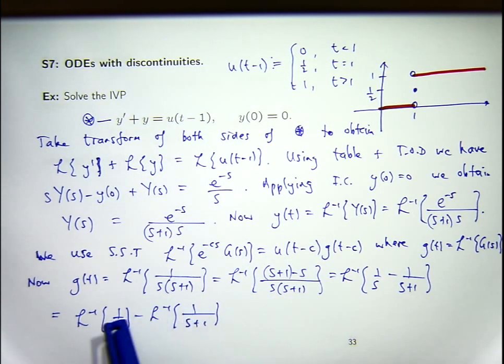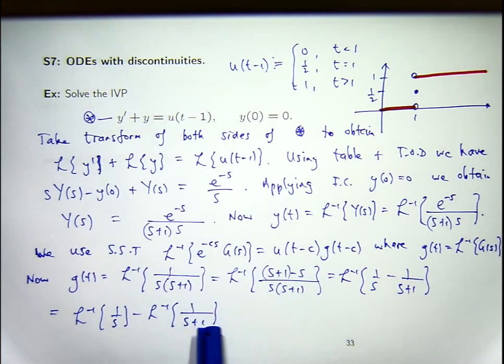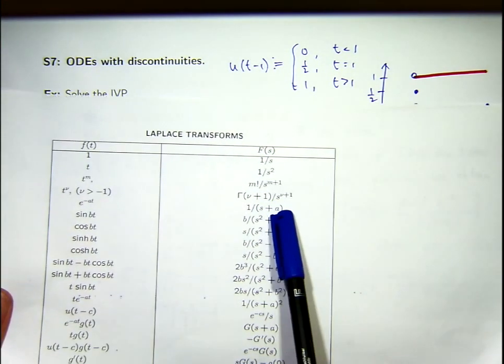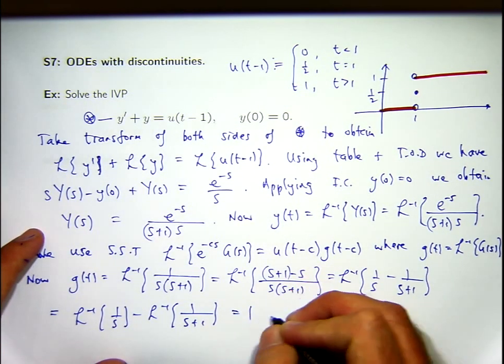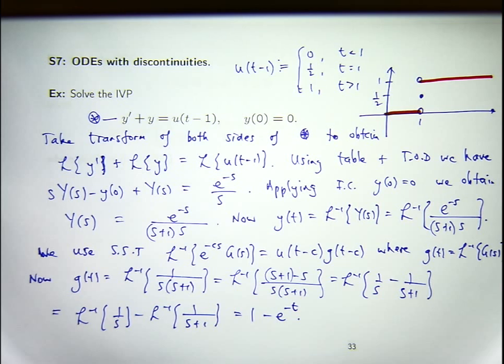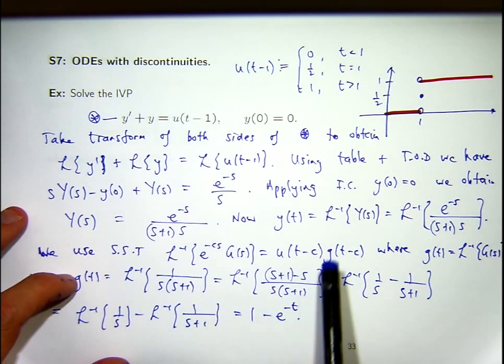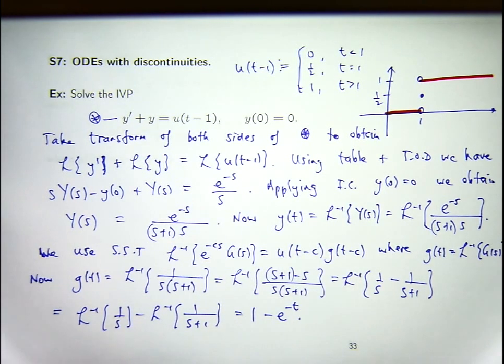So now I can just use my table. These are things that actually lie in my table. So the inverse transform of 1 on S, that's 1, and the inverse transform of 1 on S plus 1, if I look down here, that's that, that'll be E to the minus T. So I'm almost there. I've got little g of T. What I want to do is form this product with C equals 1.